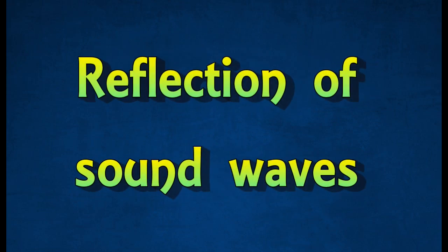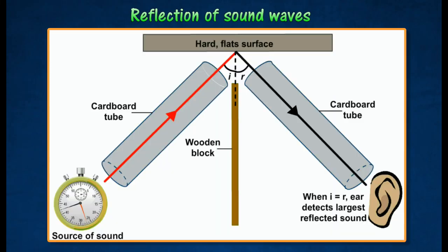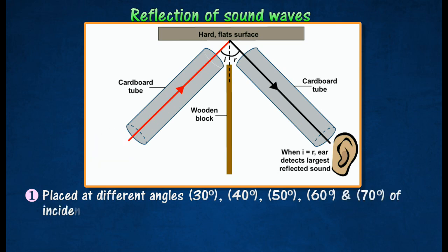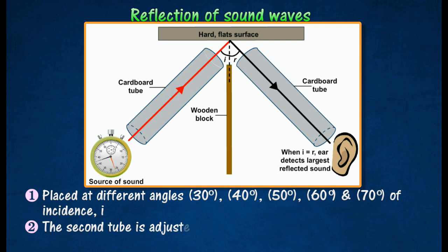Reflection of sound waves: To study the reflection of sound waves, a hard reflecting flat surface is set up vertically together with two hollow cylindrical cardboard tubes. A stopwatch is placed at one end of the first cardboard tube at different angles of incidence.